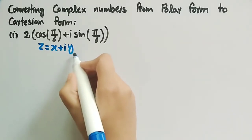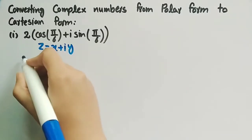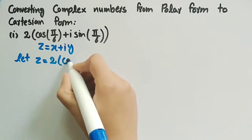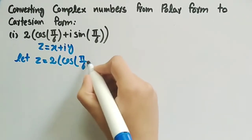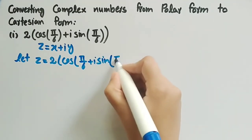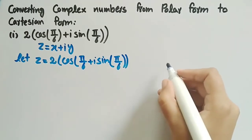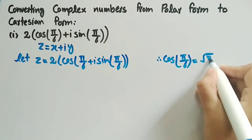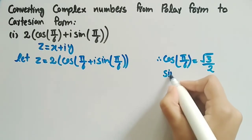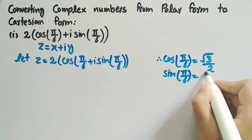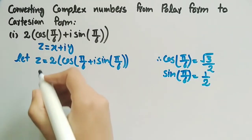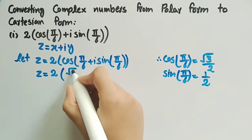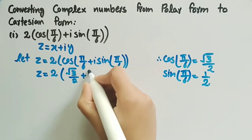Where x is the real part and y is the imaginary part of the complex number. Let z = 2 cos(π/6) + i sin(π/6). We know that cos(π/6) = √3/2 and sin(π/6) = 1/2. Now we will use these two values and we will get z = 2(√3/2 + i·1/2).